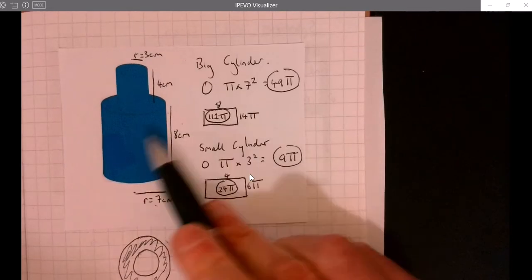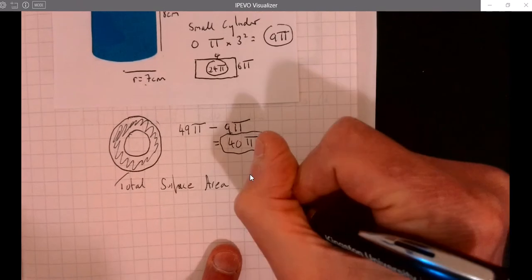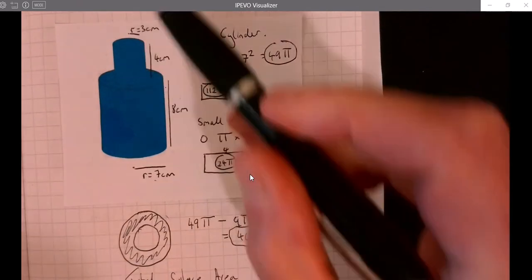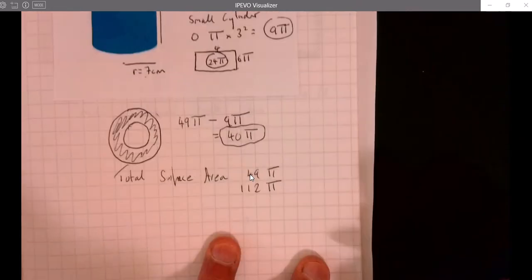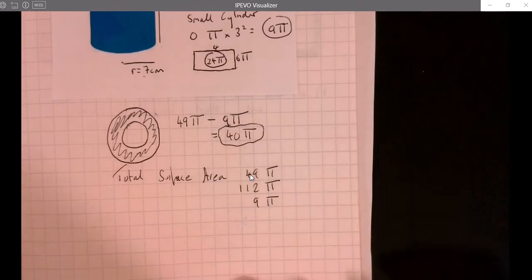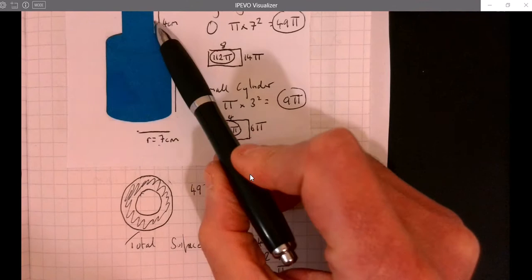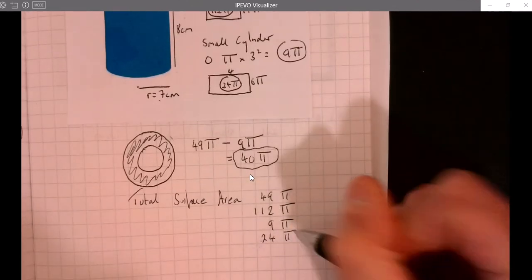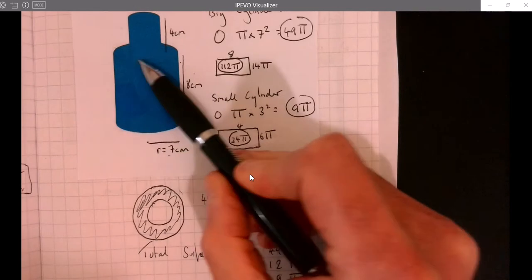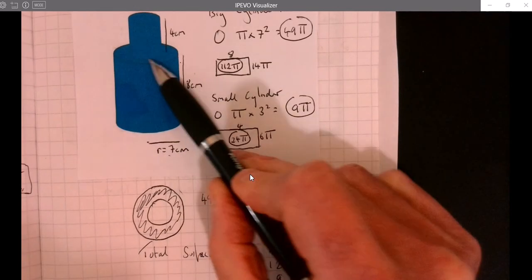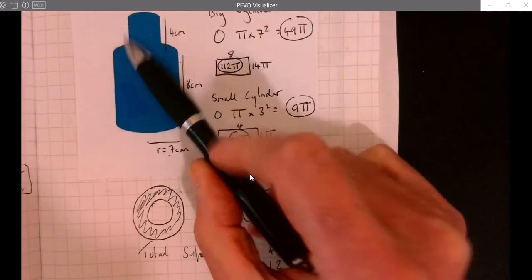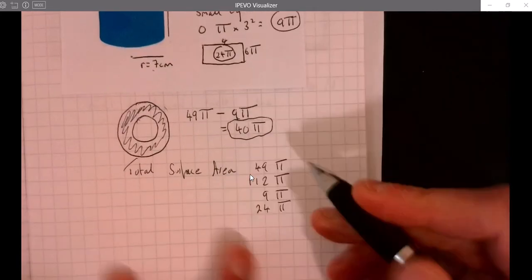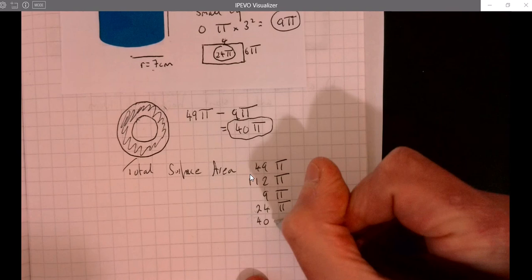We've got the curved part 112π, then we've got the small circle at the top which is 9π, then we have this smaller curved section which is 24π, and then we've got this polo mint bit, big circle take away small circle to get this ledge, which we worked out was 40π.